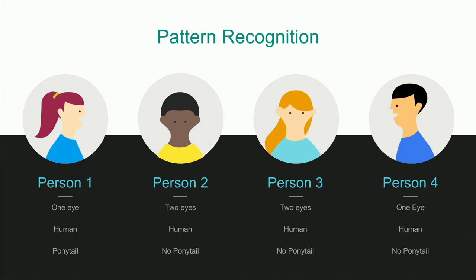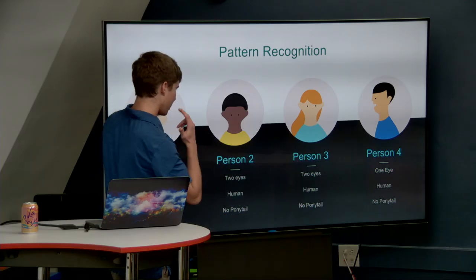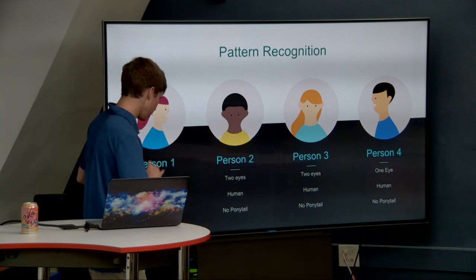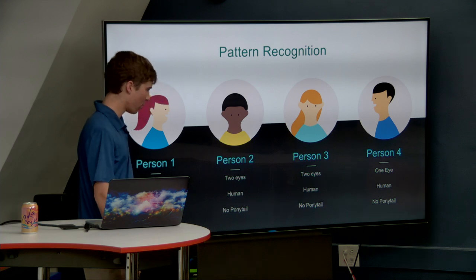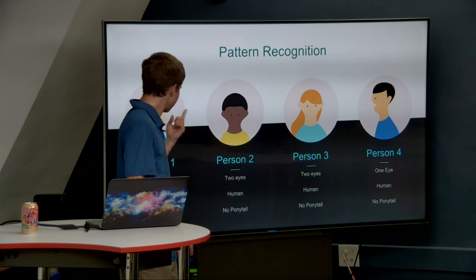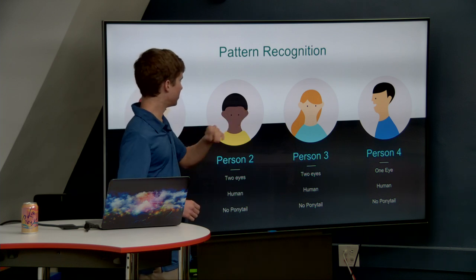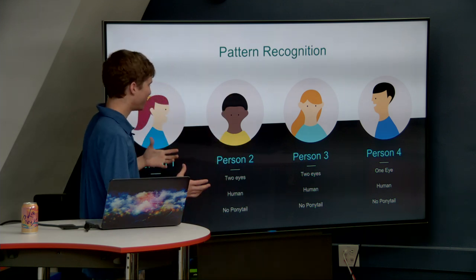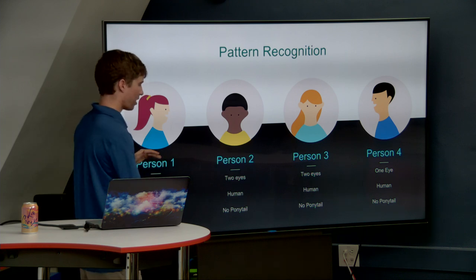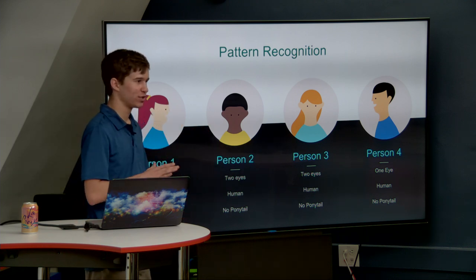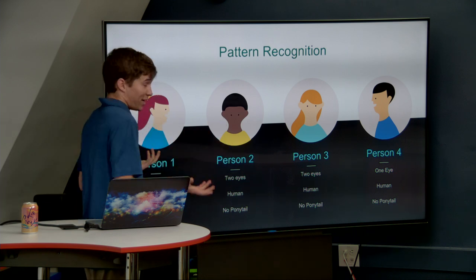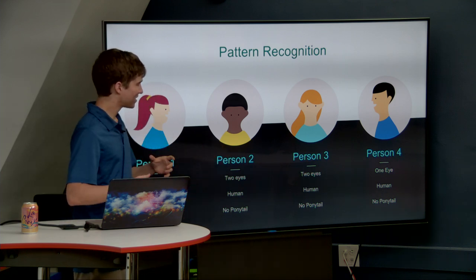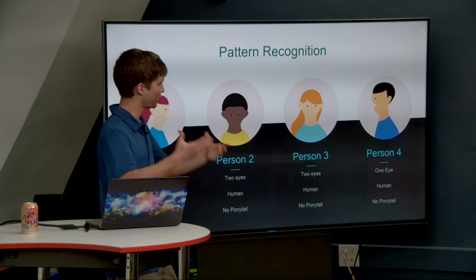Looking at the data, maybe you assume people with ponytails are probably girls — a little sexist, but we'll use it. You'd identify one person with ponytail at 95% confidence as a girl, and the rest you'd say 100% sure they're not girls. Slight problem: one of them is. This contrived example shows that if I limit the amount of data you can look at, you're restricted in what patterns you can find — and that has severe manifestations when applying machine learning and computer vision.